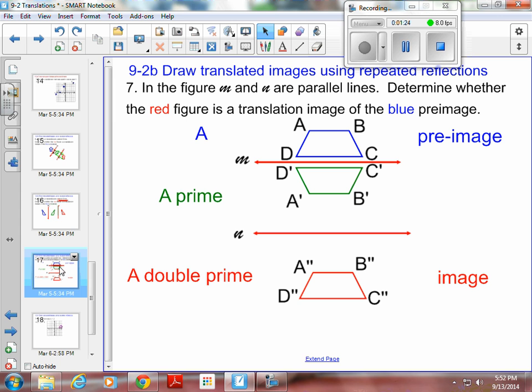And one more time, just to make sure you're completely aware of this, and some added notation here. If I've got my trapezoid A and I reflect it across M, I'm going to get this green trapezoid A prime.